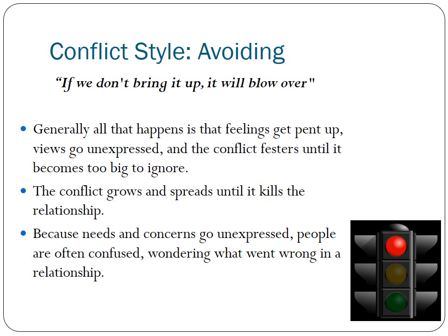Then we have avoiding — the classic 'if we don't bring it up, it'll blow over.' Generally, all that happens is that feelings get pent up, views go unexpressed, and the conflict festers until it becomes too big to ignore. The conflict grows and spreads until it kills the relationship. Because needs and concerns go unexpressed, people are often confused wondering what went wrong. Avoiding is a really bad conflict style — red light, don't do it.